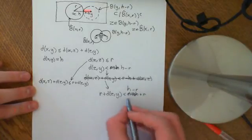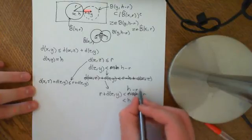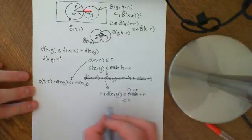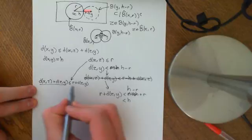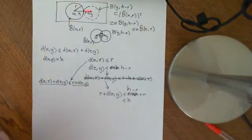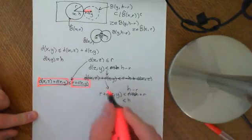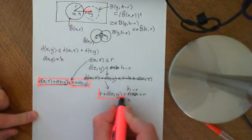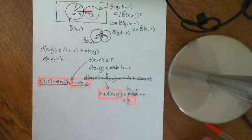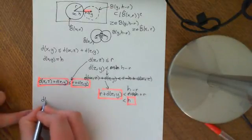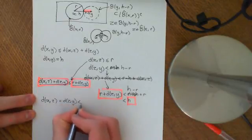Now what we can do is firstly say that this is less than h — we just cancel the negative r and the plus r. And then we'll apply the transitive property. So if this is less than or equal to this, and this thing here is also here and is less than h, then we get that the distance between x and z plus the distance between z and y is less than h.